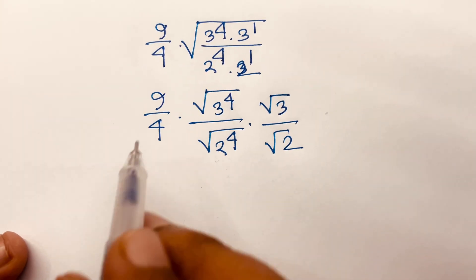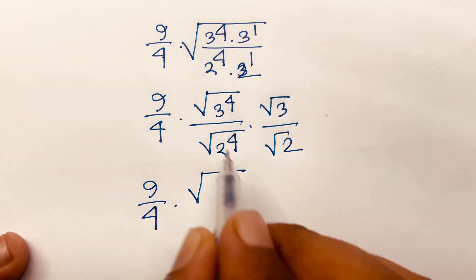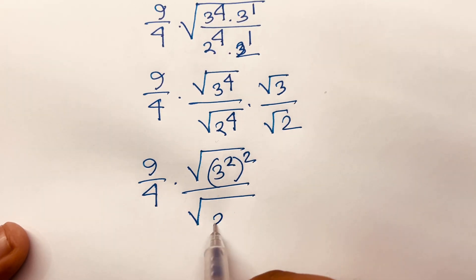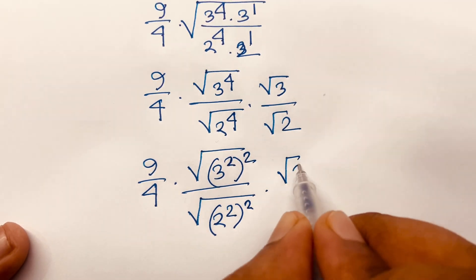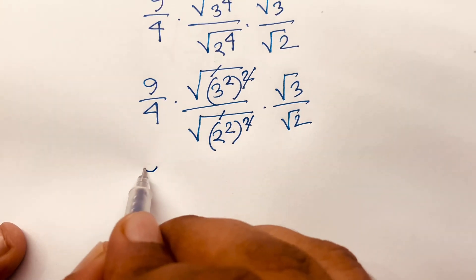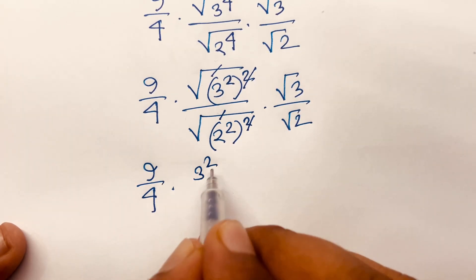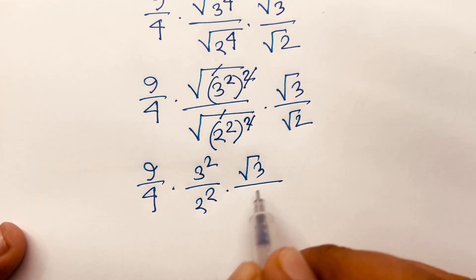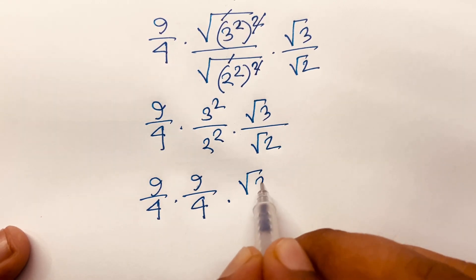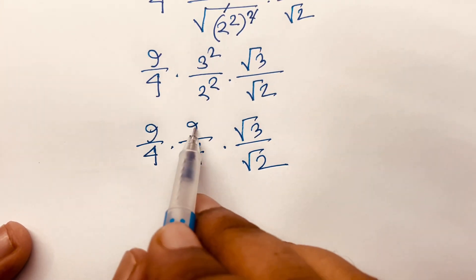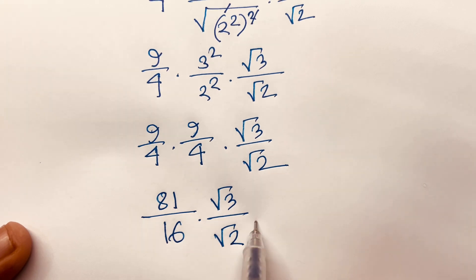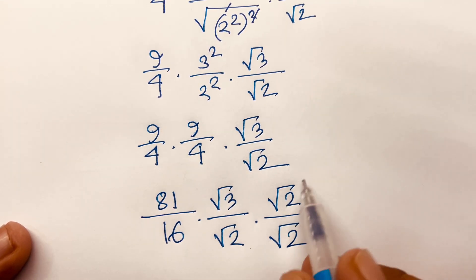Now √(3⁴/2⁴): since √(3⁴) = 3² and √(2⁴) = 2², we get 3²/2² = 9/4. The square roots cancel appropriately. So we have 9/4 times 9/4 times √(3/2). Multiplying: 9 × 9 = 81, and 4 × 4 = 16, giving 81/16 times √(3/2).